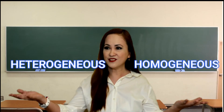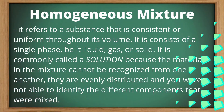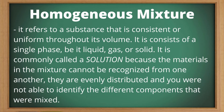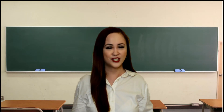Mixtures can be homogeneous or heterogeneous. A homogeneous mixture consists of a single phase, be it liquid, gas, or solid. It is commonly called a solution because the materials in the mixture cannot be recognized from one another — they are evenly distributed and you are not able to identify the different components that were mixed. Corn oil, vinegar, and sugar solutions are homogeneous mixtures.